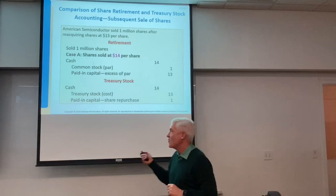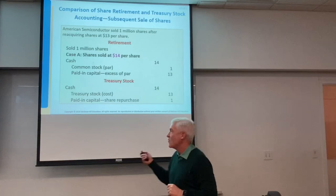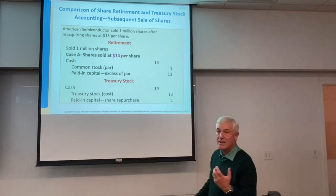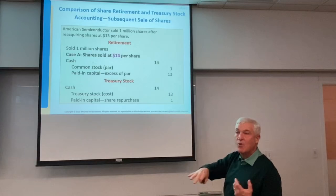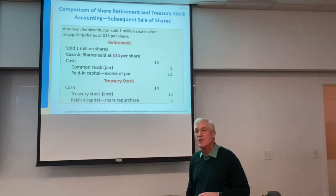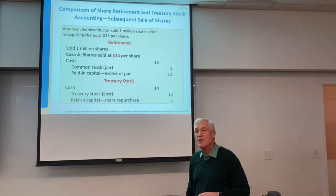Since you cannot record a profit on selling your own shares, you take that extra $1 million and put it into paid-in capital. The company sold the whole million shares and received cash of $14 million, took the treasury stock out at $13 million, and the $1 million left over — a gain really — goes as a credit into paid-in capital. It's a credit, so it's good news for equity. The company bought shares at $13 and sold them at $14, which was a good increase in paid-in capital, but it has nothing to do with earnings.